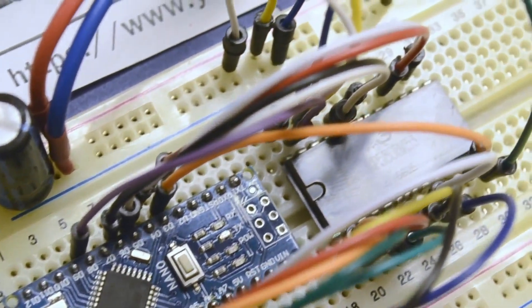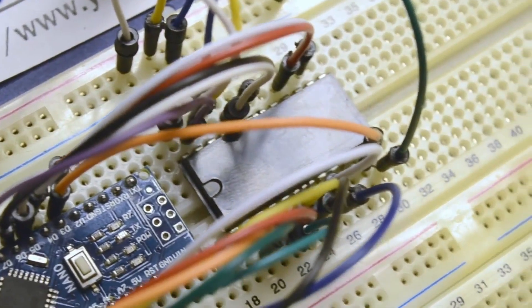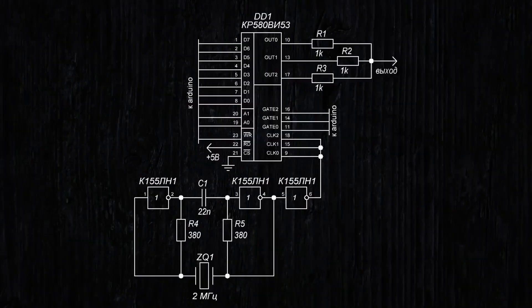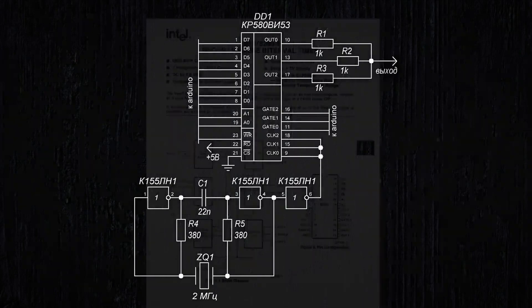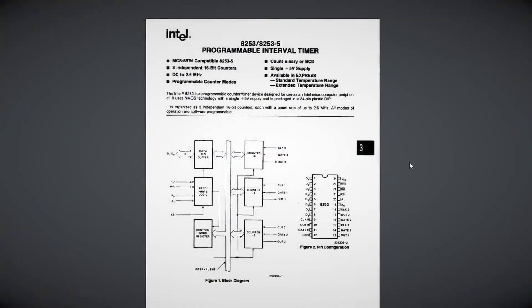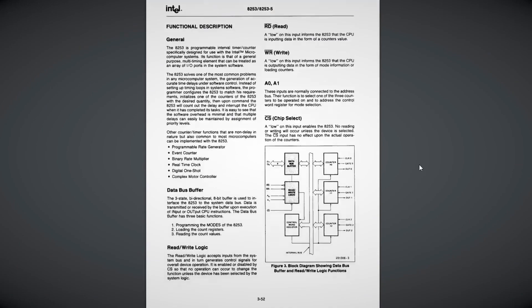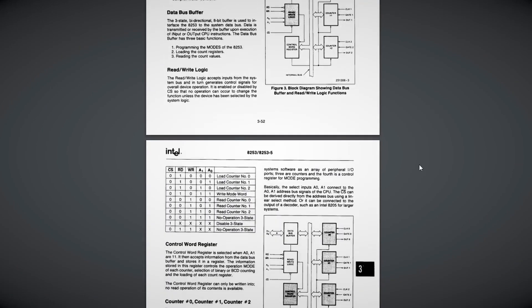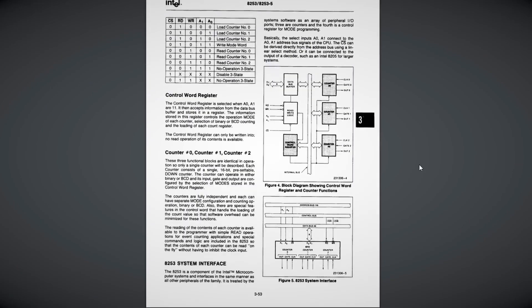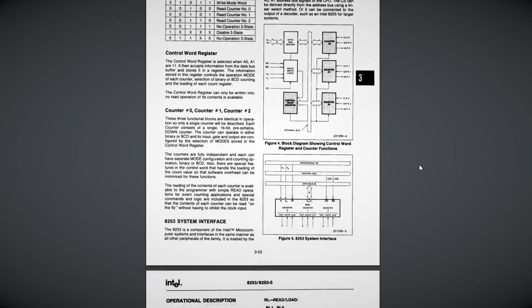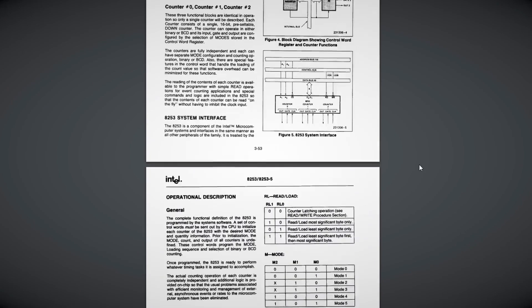Connect the read line to the power supply. Connect the enable input to ground. Initialize the ports for output. Set the write input to a high level. Now you need to properly configure the E53 on all three channels. I can advise you to browse the datasheet for the foreign equivalent, the Intel 8253. In the Russian version, the information is quite unclear — as always, actually.